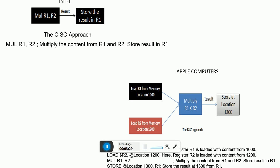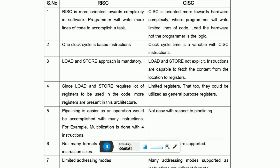This is the major difference: RISC makes it a little lengthy where CISC makes it very simple. But where is the complexity coming from? The hardware is the complexity in Intel's CISC — Complex Instruction Set Computer — the hardware takes over all the pain. But in RISC, the software takes over all the pain. In a table comparison: RISC is more oriented towards software complexity — the programmer writes more lines of code. CISC is towards hardware complexity — the programmer writes very few lines of code. In RISC, all instructions are one clock cycle based, but in CISC it is variable. Load and store architecture is followed in RISC, whereas in CISC you need not explicitly use load and store — it can fetch content directly from registers or memory locations.